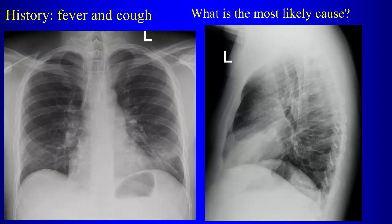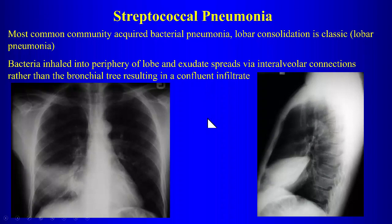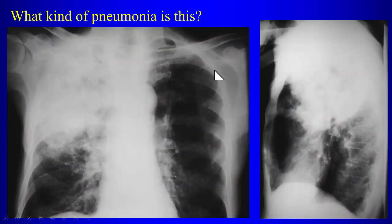For community-acquired pneumonias, Strep pneumonia is the most likely cause. The teaching is that Strep pneumonia is the most common organism for community-acquired pneumonias, so consolidation or lobar consolidation is the classic appearance. The pathophysiology is that bacteria are inhaled into the periphery of the lobe and the inflammation spreads within that lobe, resulting in confluent consolidation — lobar pneumonia.